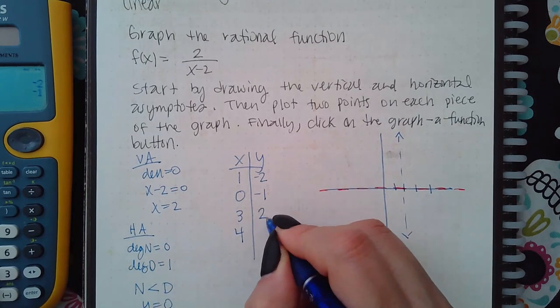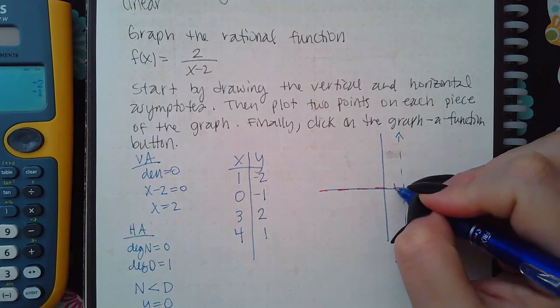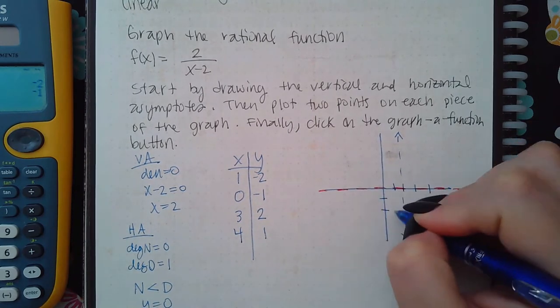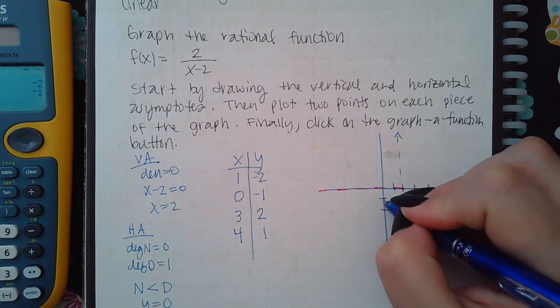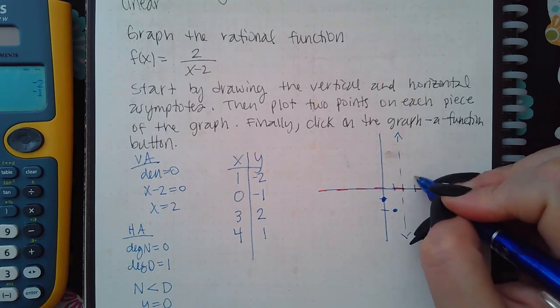Two over one is positive two, two over two is one. So there's my points: one and negative two, zero and negative one, and then three and positive two.